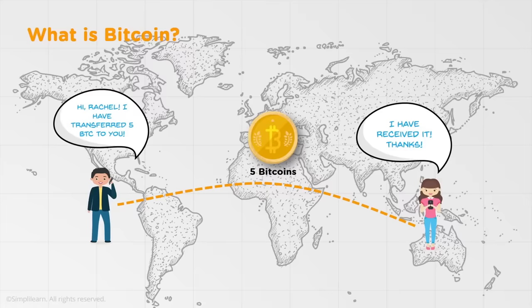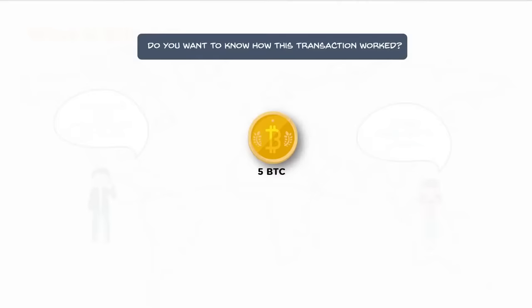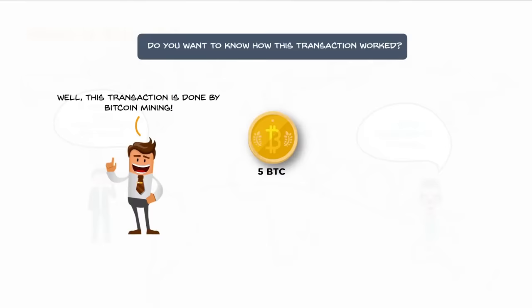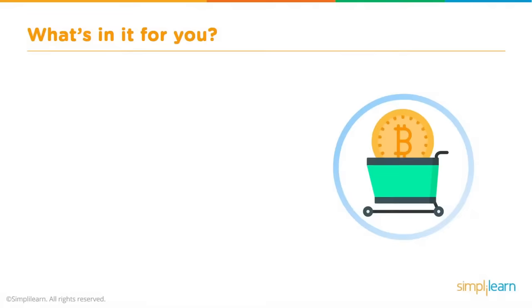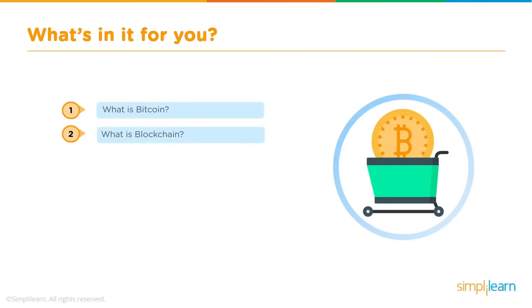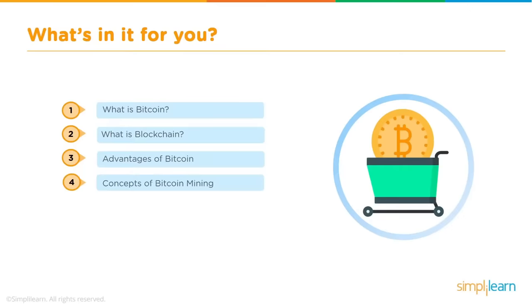This transaction is done by Bitcoin mining. We'll go deep to understand how the Bitcoin transaction works, what entities are involved behind the scenes to maintain the sanity of the Bitcoin network, and ensure that the bitcoin reaches the intended recipient successfully. Today we'll cover what Bitcoin is, the underlying blockchain technology, the advantages of Bitcoin compared to other digital currencies, the concepts of Bitcoin mining, and we'll do a demo on certain aspects of Bitcoin mining.